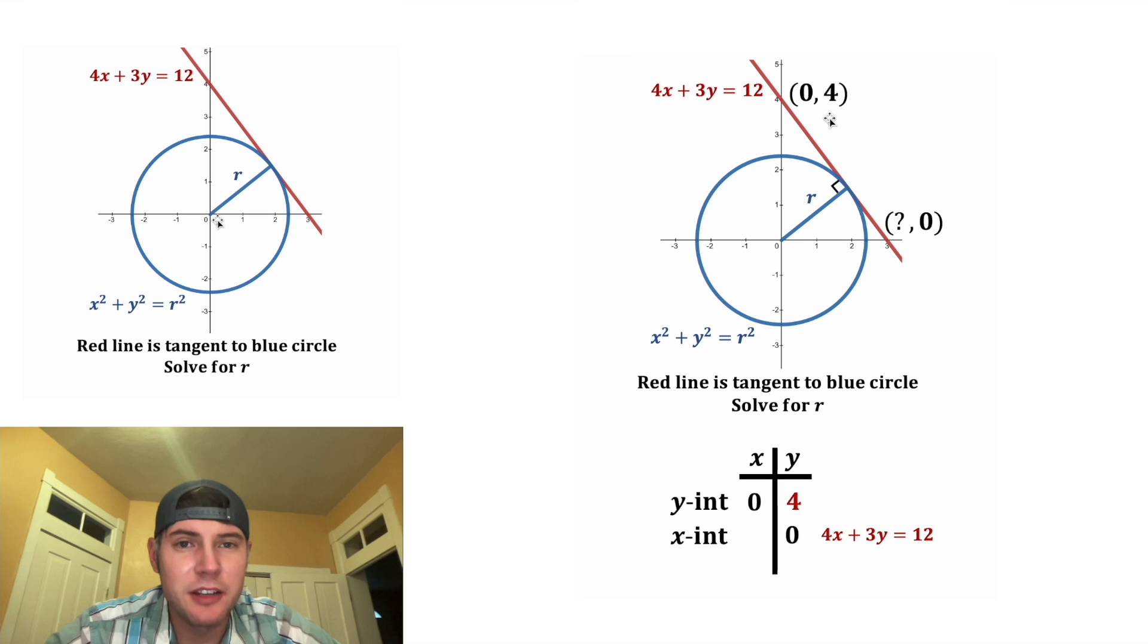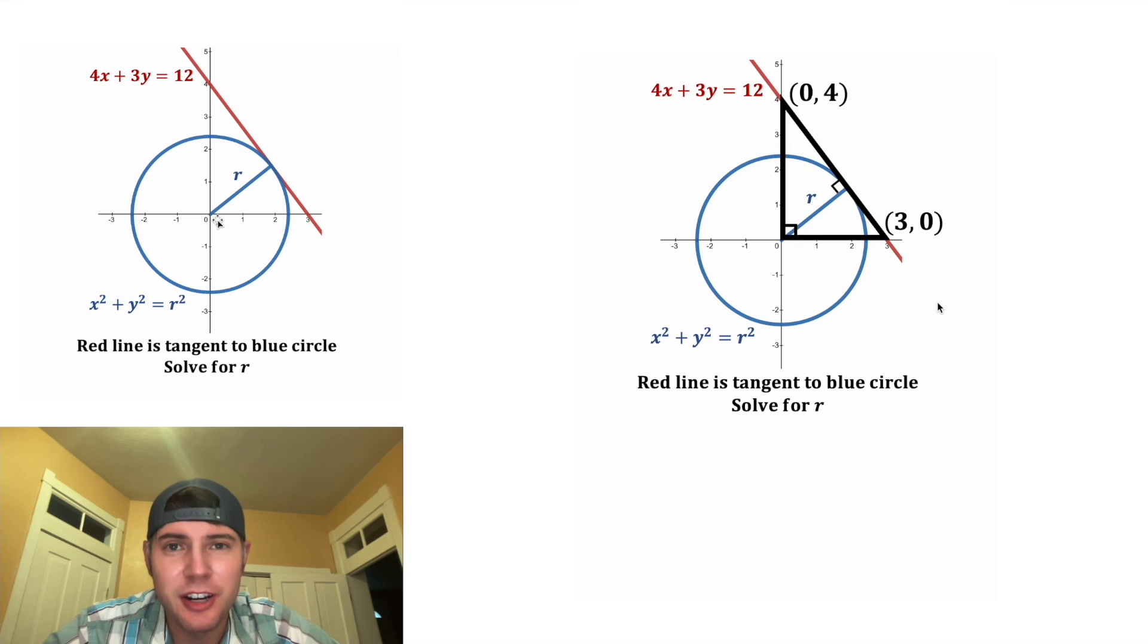And we can do the same thing for the x intercept. We'll plug in 0 for the y, which will make all this disappear. And then after we divide both sides by 4, we get x is equal to 3. And that's going to be the x intercept, and we can change that right here. So now that we've verified our intercepts, let's draw this right triangle.